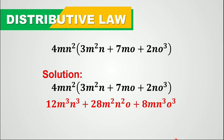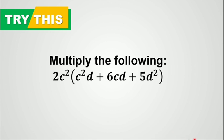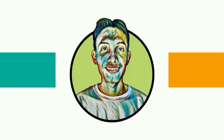Now I want you to try this one: multiply 2c squared by c squared d plus 6cd plus 5d squared. You may comment your answer in the comment section below. That's all for now. Thank you, more power, and let's keep learning.